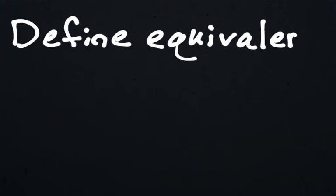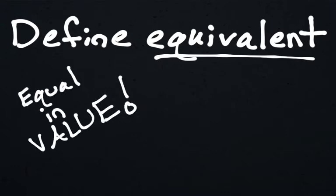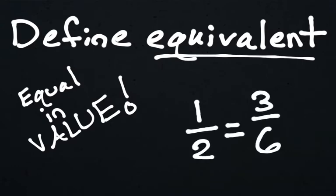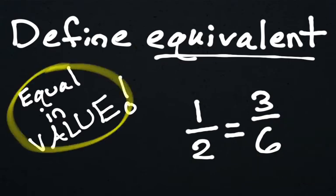The first thing you need to know is what the word equivalent means. The basic definition is that equivalent means two things are equal in value. For example, the fraction one-half, where one is half of two, is equivalent to the fraction three-sixths, because three is half of six. Both of these fractions look different, but they are equal in value.